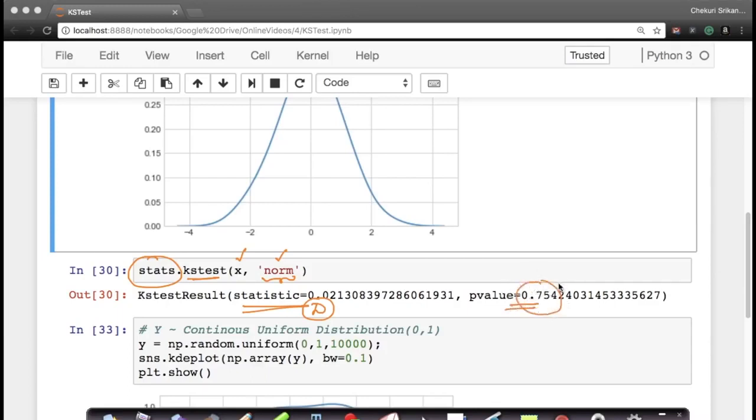If you notice, my P value here is quite high. And hence, my random variable x is distributed normally. This is important. Since my P value is very high, I basically say that my random variable x is normally distributed.